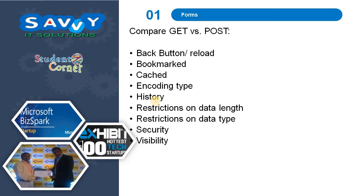When comparing GET vs POST, the differences include: back button or reload behavior, bookmarking, caching, encoding type, history, restrictions on data length, restrictions on data type, security, and visibility.